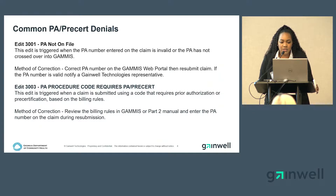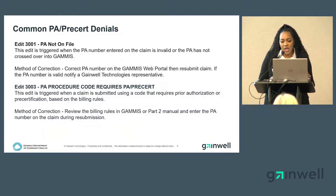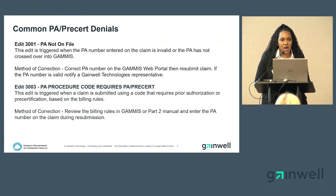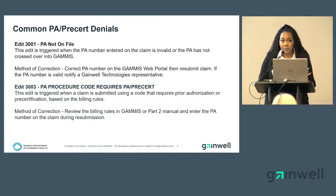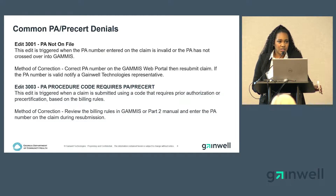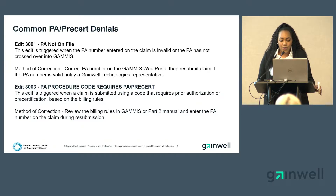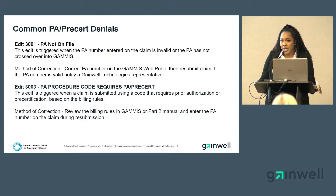Edit 3003: the PA procedure code requires a PA or pre-certification. This is triggered when you submit a claim with a code that requires prior authorization or pre-certification based on the contract billing rule. I always encourage providers to do a procedure code search prior to rendering services to a member so you can understand what is required. To correct this, review the billing rules in GAMIS — the contract billing rules — or review the manual part two, then enter the correct PA number on the claim during resubmission.